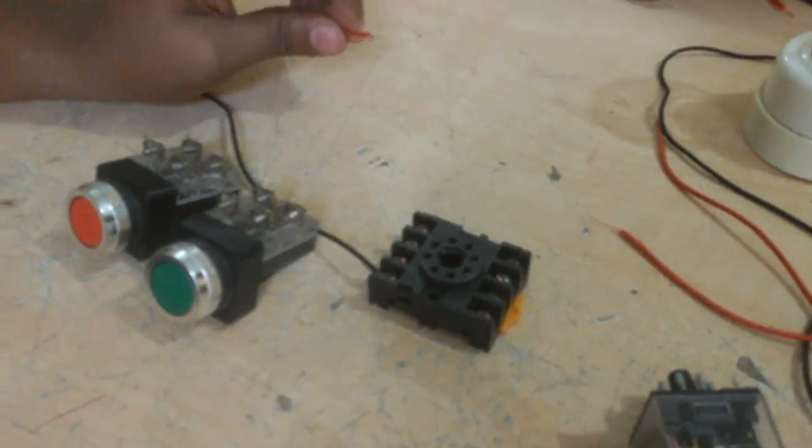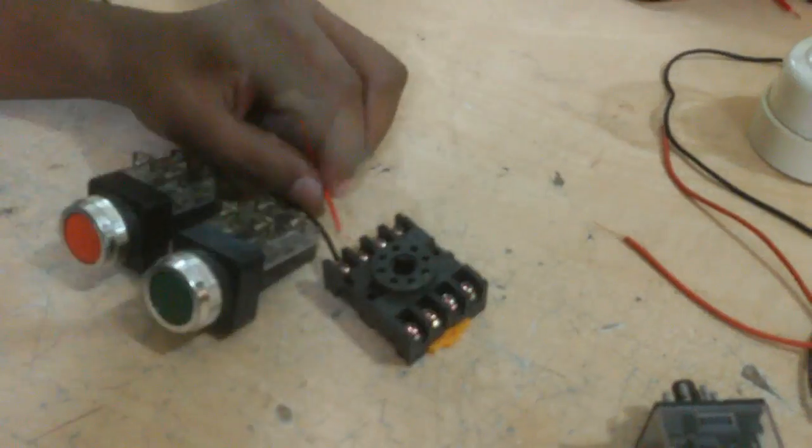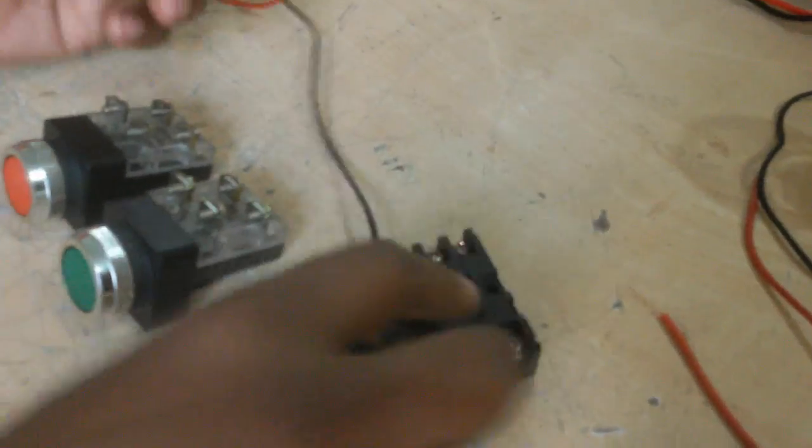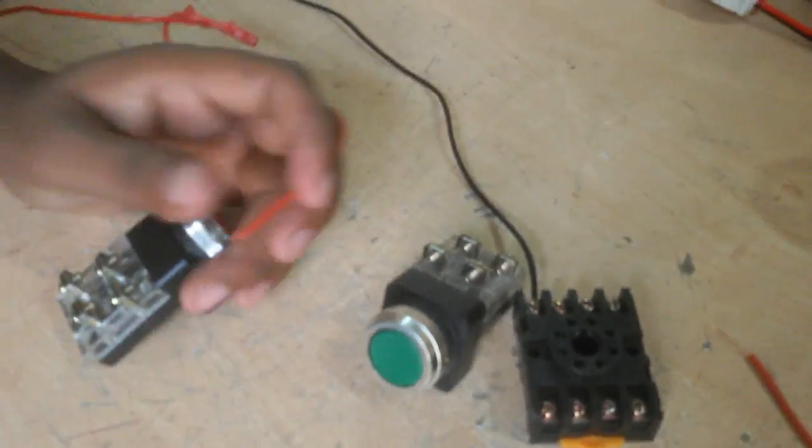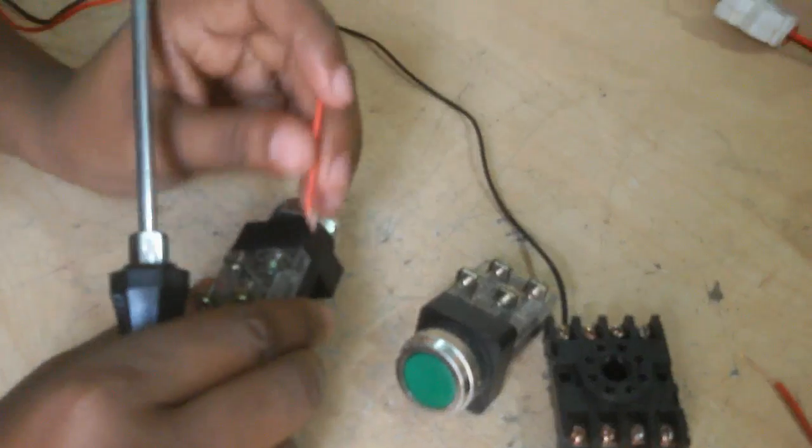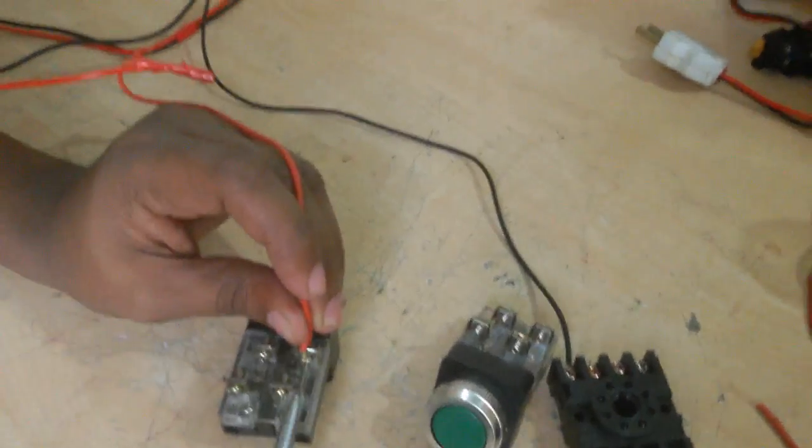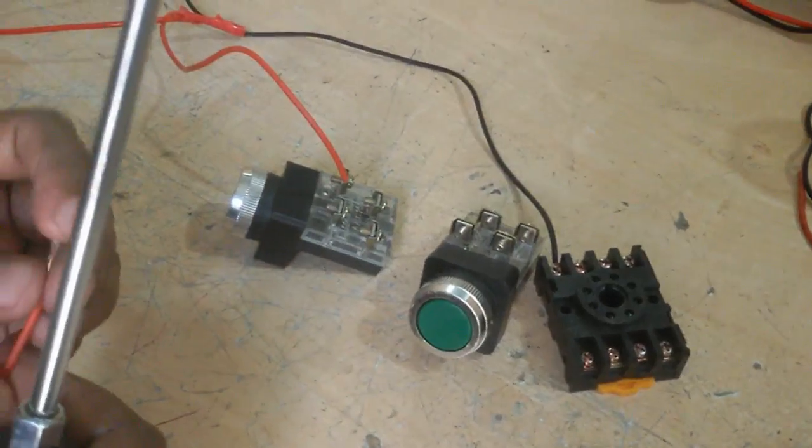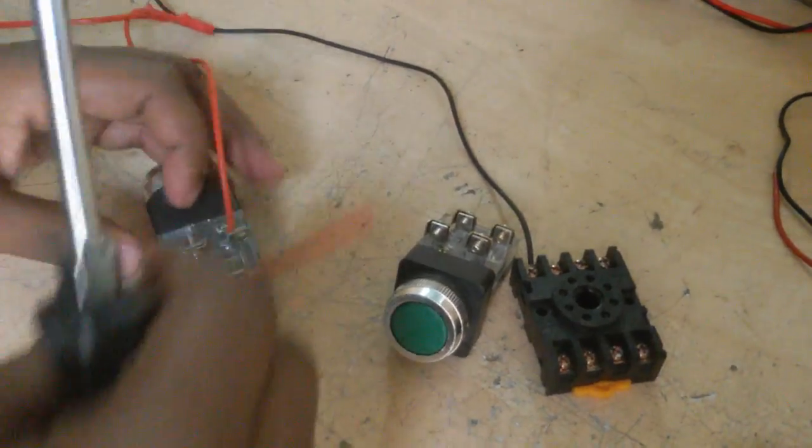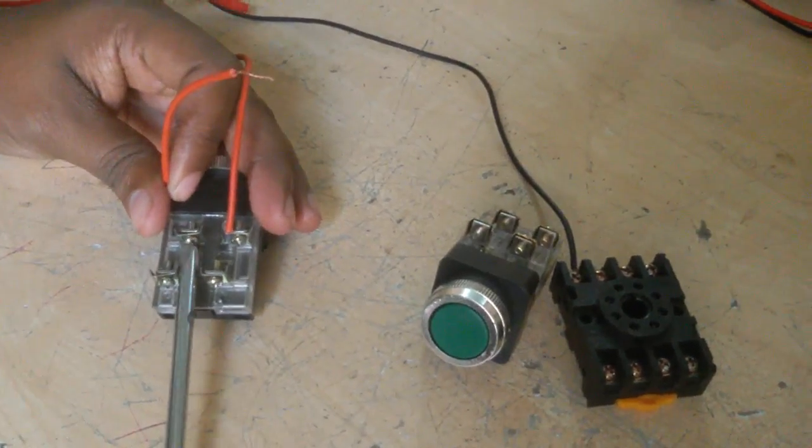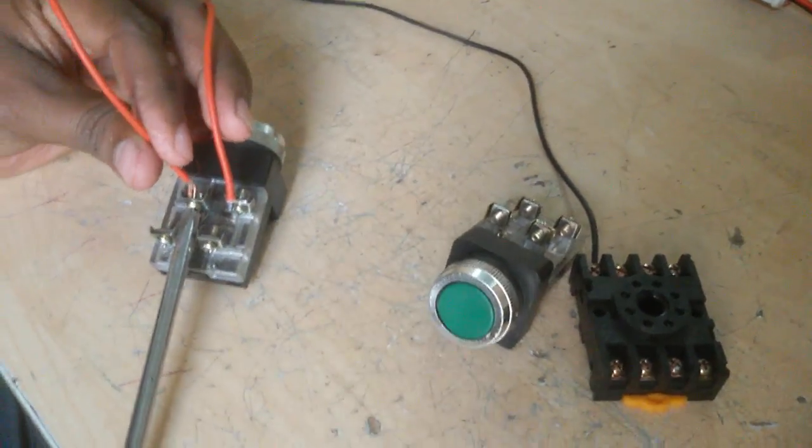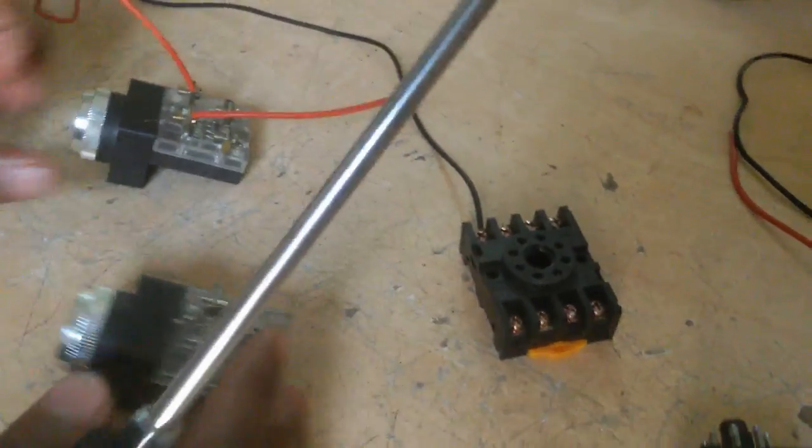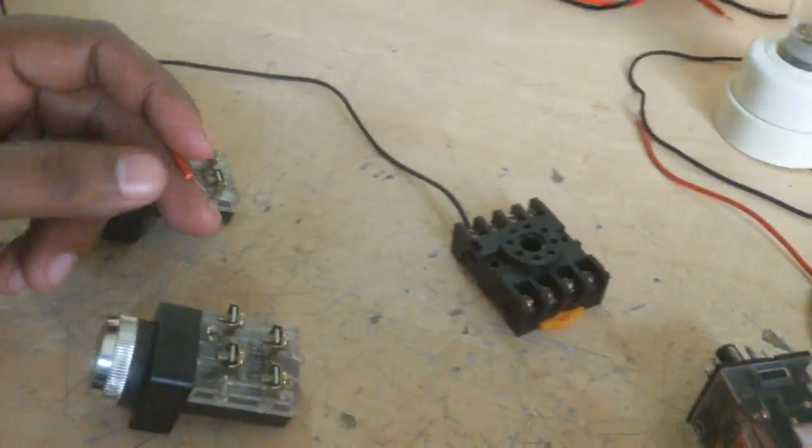This phase line, now I connect at first this 8 number terminal. Sorry, this phase line, first I connect this stop switch because I want to control this switch. Stop switch other side, I connect a new wire.